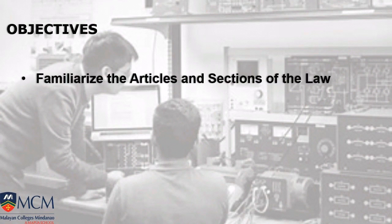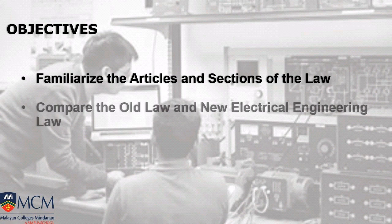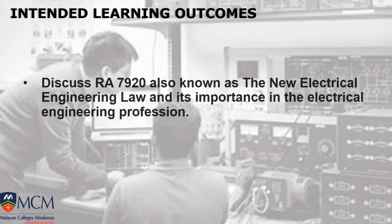Still the objectives: we need to familiarize the articles and sections of the law since we are already familiar with the definition of terms. We will compare the old law and the new Electrical Engineering Law. You will discuss RA-7920 and its importance in the electrical engineering profession. After this lecture, we will discuss in our discussion boardroom about the issues and concerns for 2020, all about RA-7920, since we encounter problems in our chapter which is IIEE.